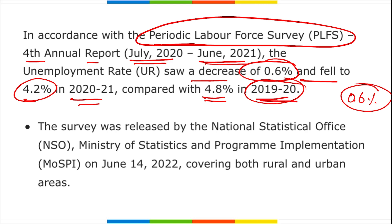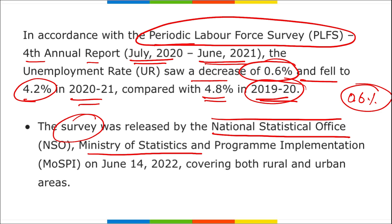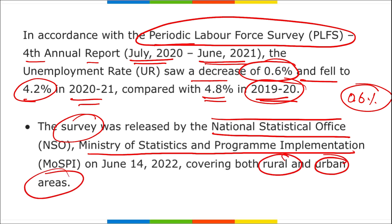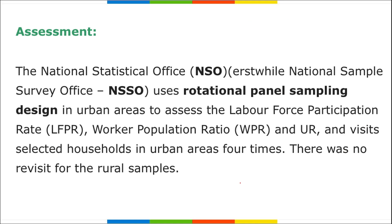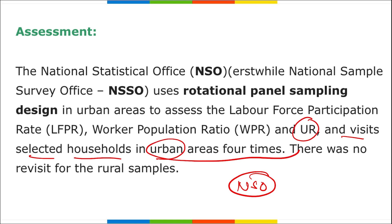Both rural and urban areas were covered under this Periodic Labour Force Survey. NSO uses a rotational panel sampling design in urban areas to assess the labour force participation rate, worker population ratio, and visits selected households in urban areas four times. There were no revisits for rural samples.